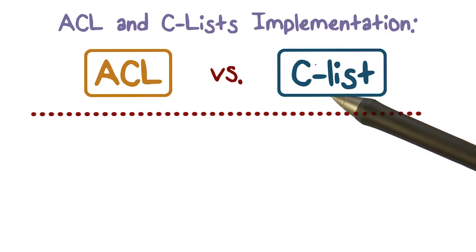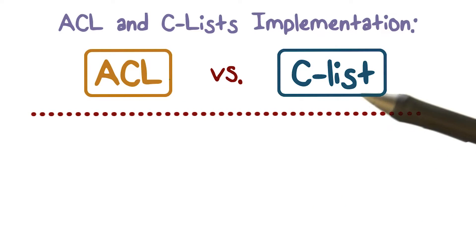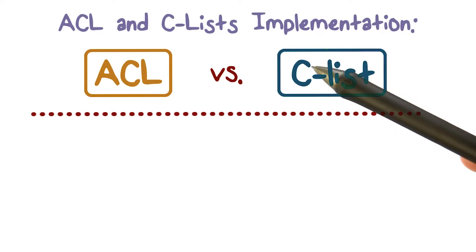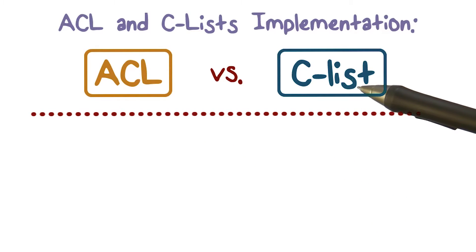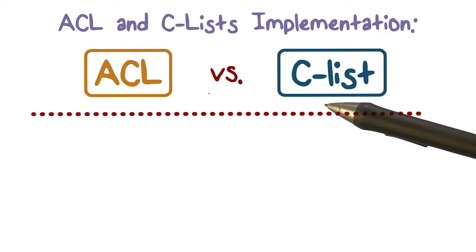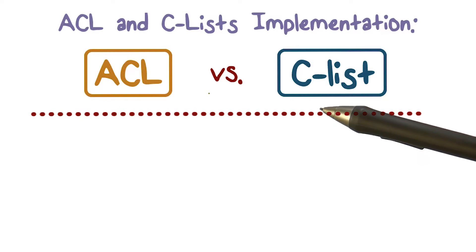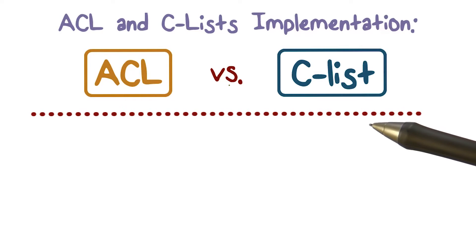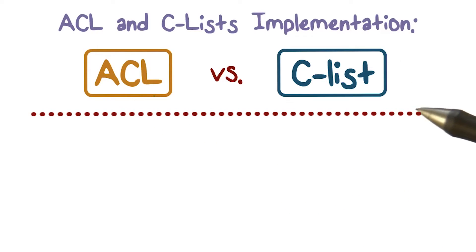When there's more than one way of doing something, we have to decide — if you're implementing an operating system, should you go with ACLs or CLists? Most operating systems use access control lists, but some were done capability-oriented or capability-based. So there must be some pros and cons. Let's look at a couple of metrics you can use to decide whether to go with an ACL or CList-based implementation of access control.